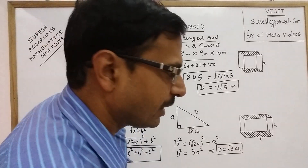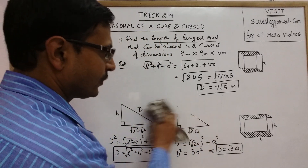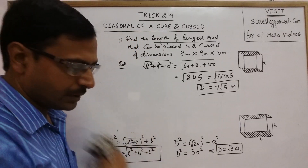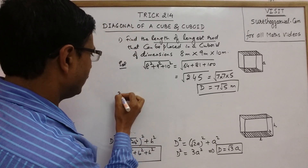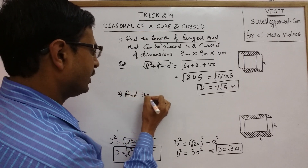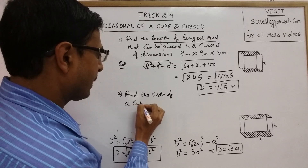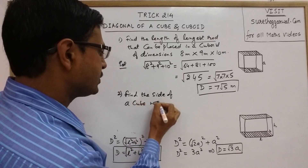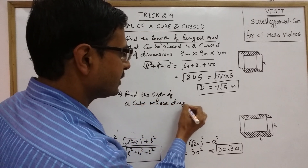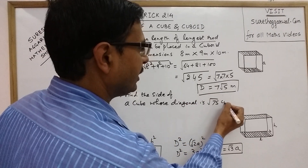Similarly, you have a question on a cube also. Suppose you need to find the side of a cube whose diagonal is √75 centimeters.